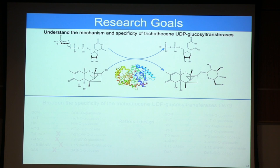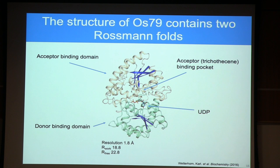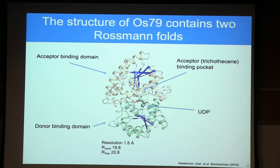To do this, we solved the structure of OS79, a trichothecine UDP glucosyltransferase from rice — the first structural information on an enzyme able to glycosylate trichothecines. This enzyme is composed of an N-terminal acceptor binding domain consisting of a six-stranded parallel beta sheet surrounded by nine alpha helices, and a C-terminal donor binding domain consisting of seven parallel beta sheets and nine alpha helices. The two domains form a globular protein where substrates bind in the middle cleft. UDP is bound, but unfortunately there is no trichothecine in this structure.